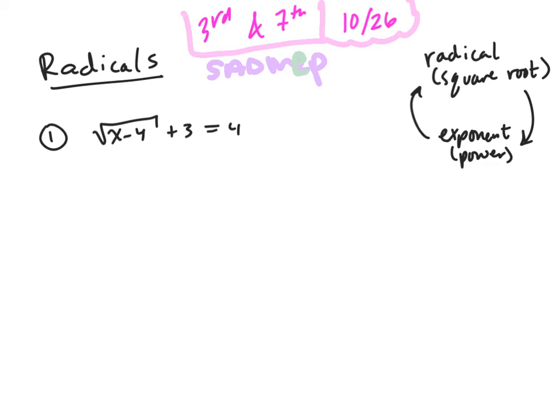Okay, so the first thing I'm going to do is add or subtract. I'm going to take care of that 3. It's plus, so I'm going to do minus. Square root of x minus 4 is equal to 1. I don't have any numbers that are dividing or multiplying right now, so I can't do that.